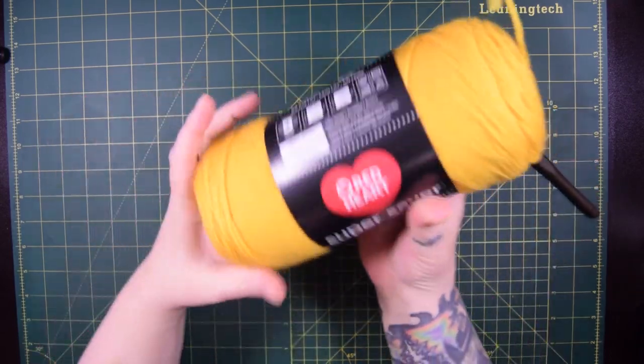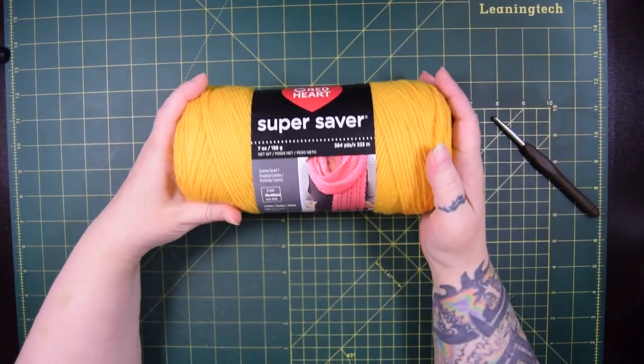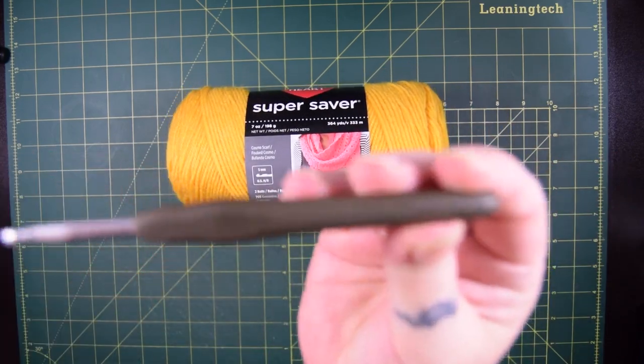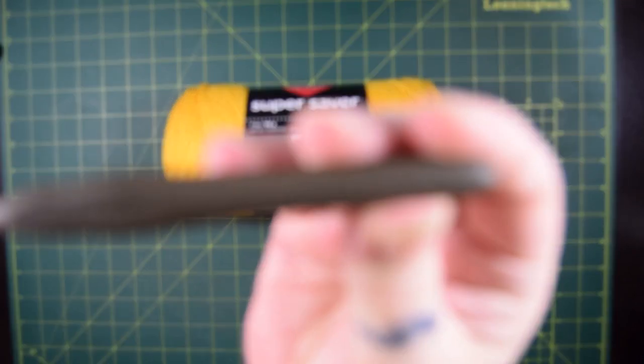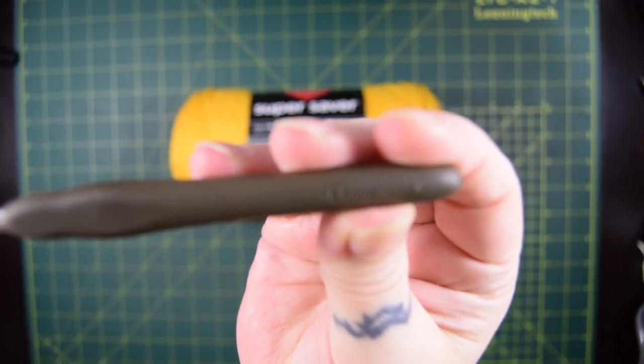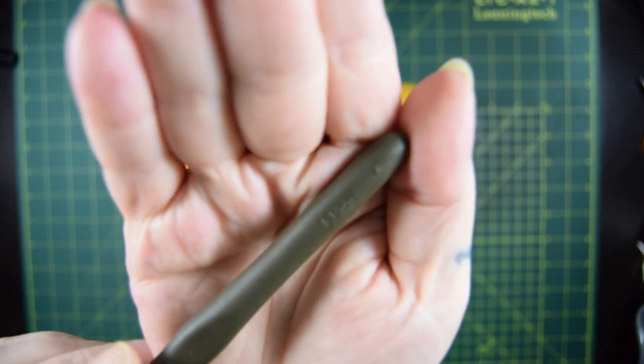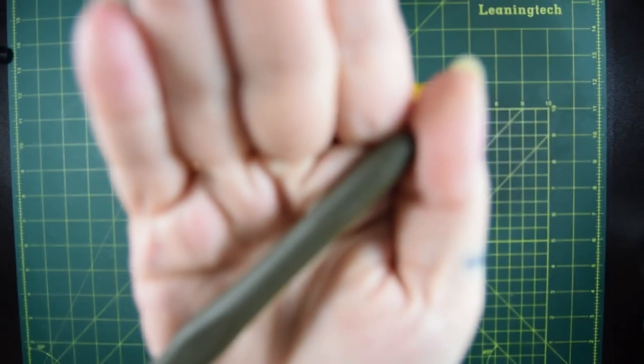So for the next scarf I'm using Red Heart Super Saver for the yarn. And this is different from making amigurumi, which I usually make. So instead of downsizing the hook, I'm actually upsizing the hook, which is definitely strange for me.